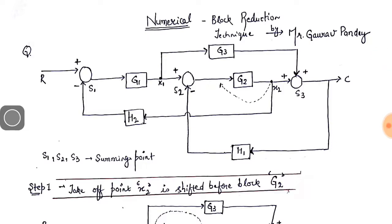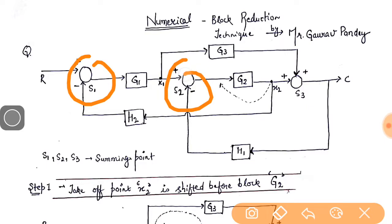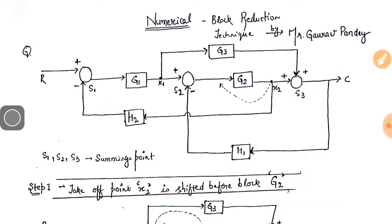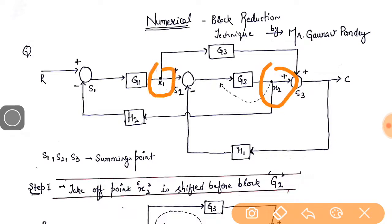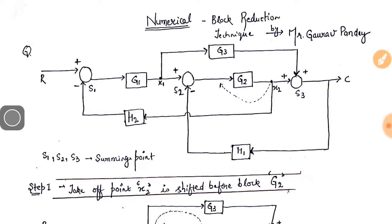In this particular numerical we are having three summing points S1, S2, and S3, and simultaneously two takeoff points X2 and X1. We have to replace or swap the positions of these summing points or takeoff points, and there would be some modification with the takeoff point branch or the summing point branch. Before starting, take a pause and try to solve this numerical by yourself — if you are not able, then look at the solution.